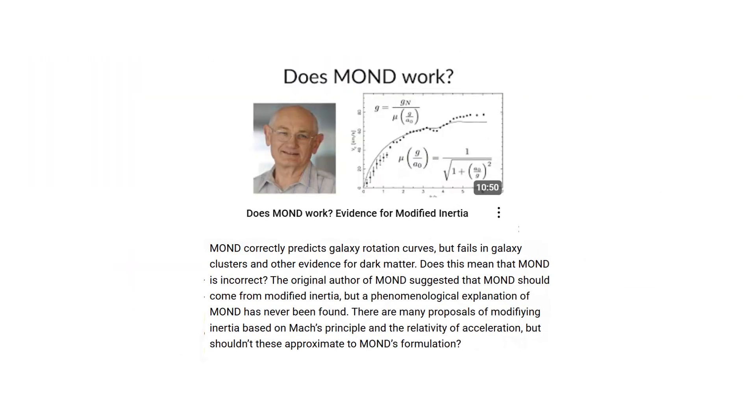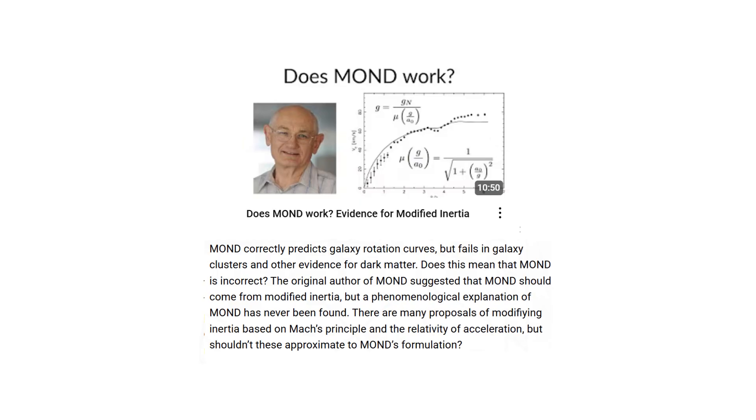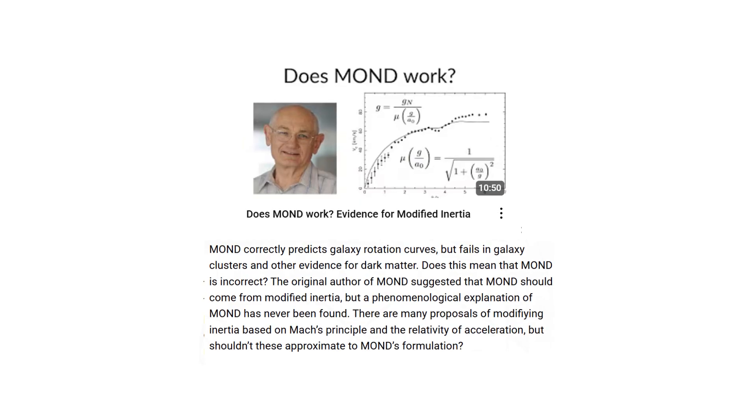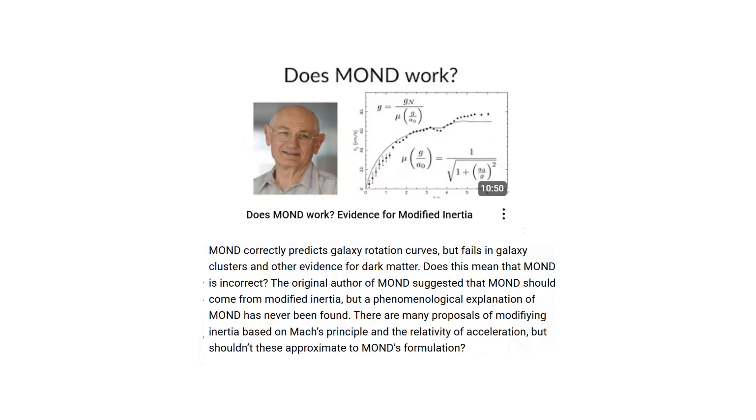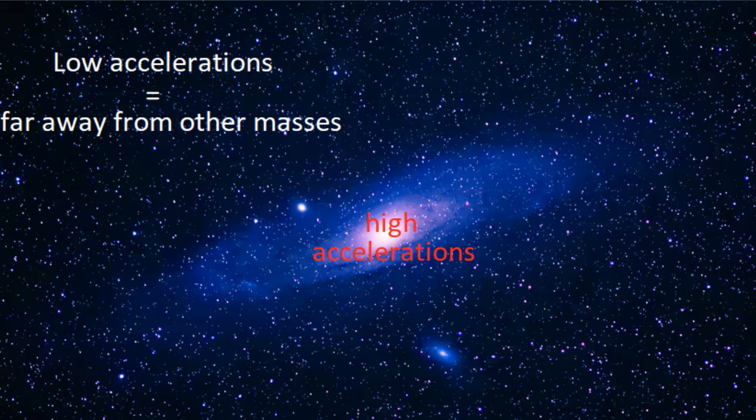We explained MOND in our previous video and how it relates to Mach's principle as a modified inertia theory, in which, at low accelerations, the inertia of a body is decreased. But low accelerations can be trivially related to being far away from other masses, and it looks like MOND could have an origin in Mach's consequence that the inertia of a body must decrease when ponderable masses are removed from its neighborhood.